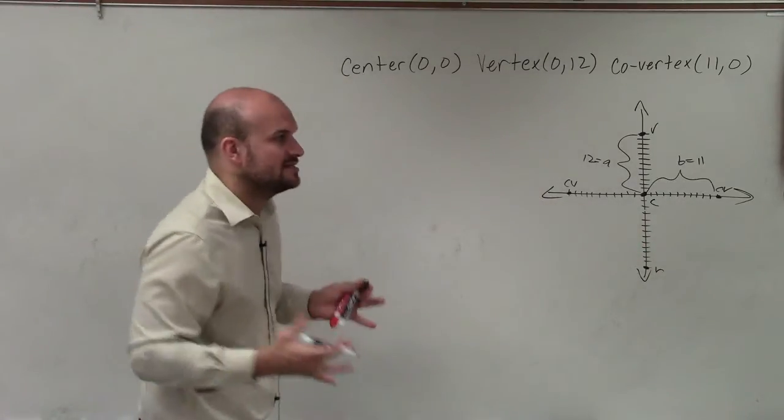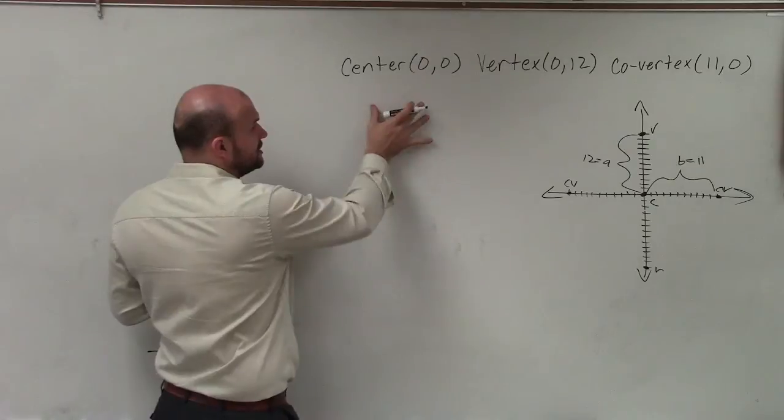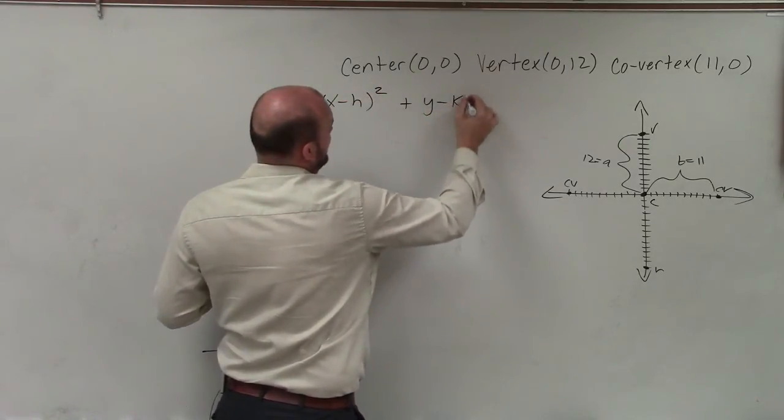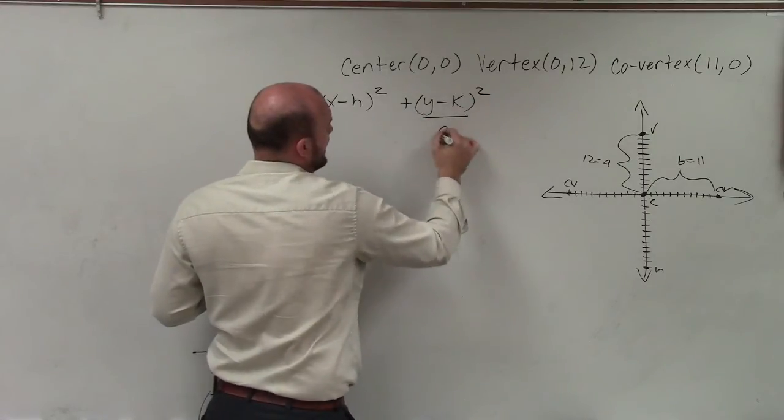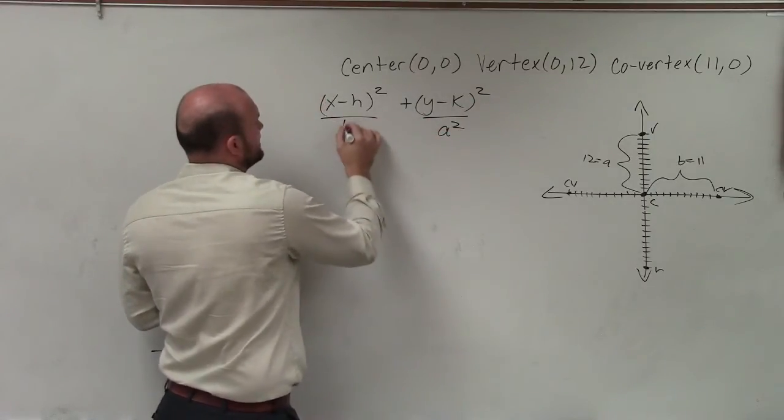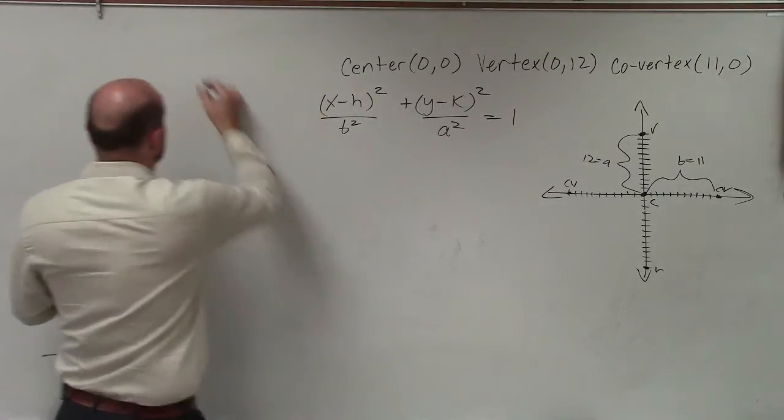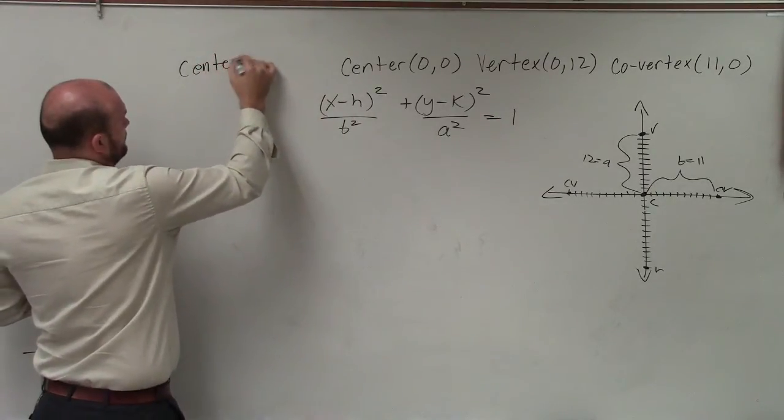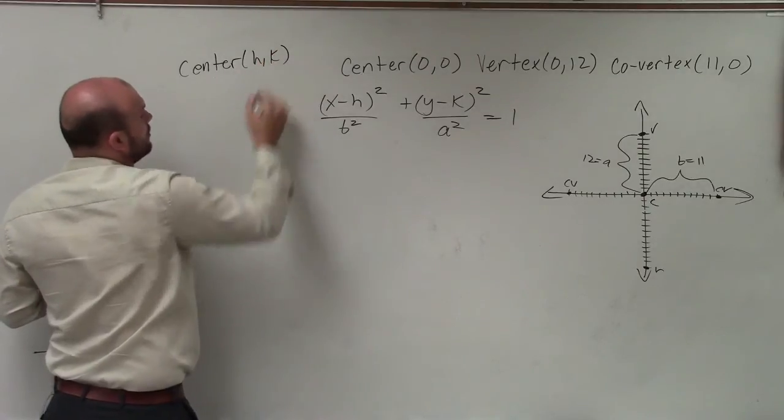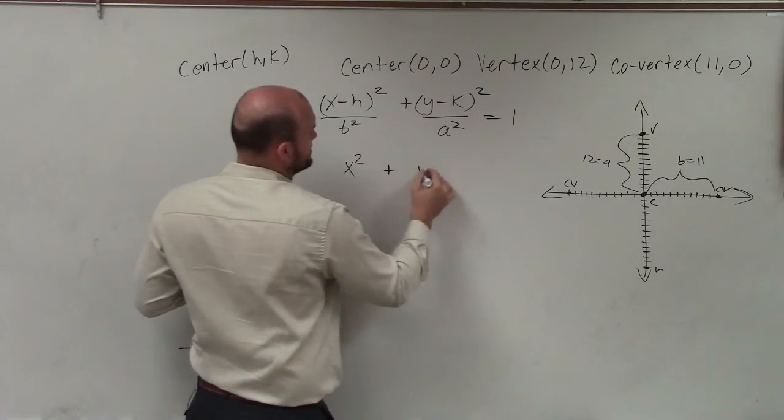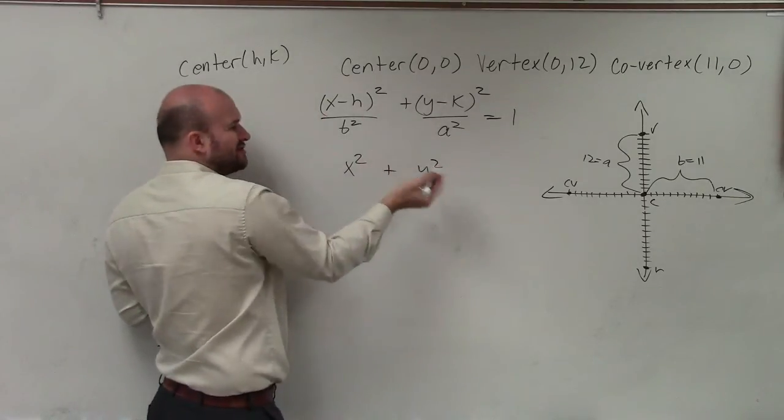Since the major axis is vertical, we're going to use this formula: x minus h squared over b squared plus y minus k squared over a squared, where a squared is under the y, and b squared is under the x, equals 1. Now, remember, the center is h comma k. Well, since our center is at 0,0, I can write x squared plus y squared, right? Because h and k are 0 and 0.